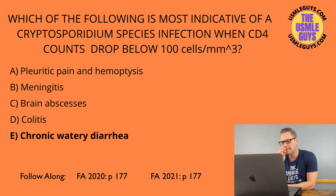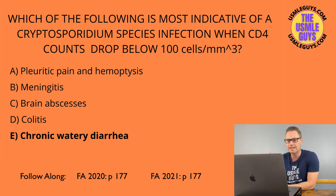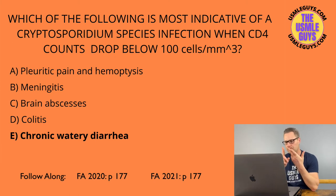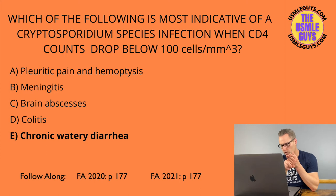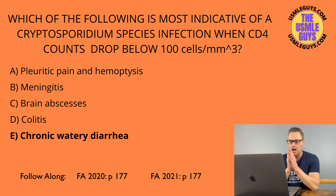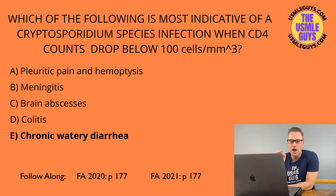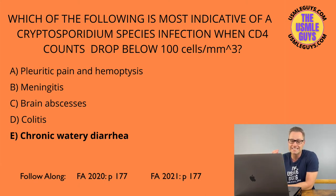CMV has the mnemonic CREEP: Colitis, Retinitis, Esophagitis, Encephalitis, and Pneumonitis. On endoscopy, watch for linear ulcers. On fundoscopy, look for cotton wool spots. Biopsy will demonstrate cells with intranuclear inclusion bodies that have a classic owl's eye appearance — very high yield.